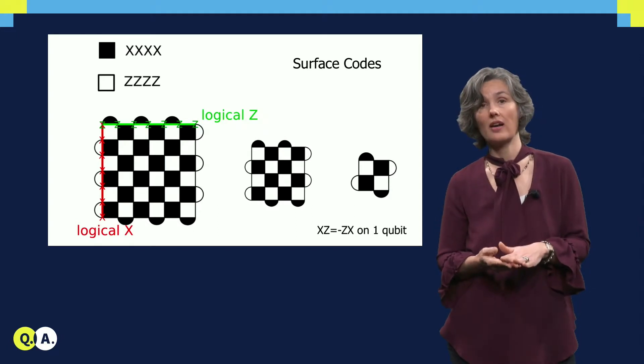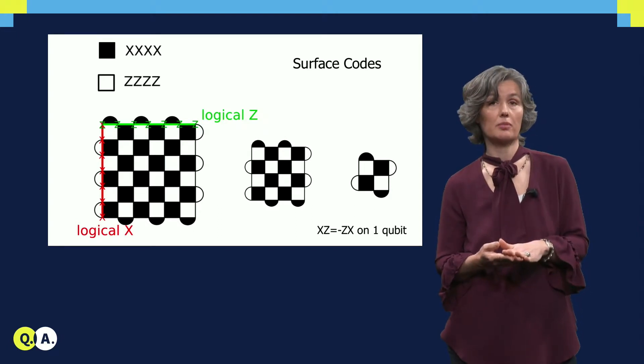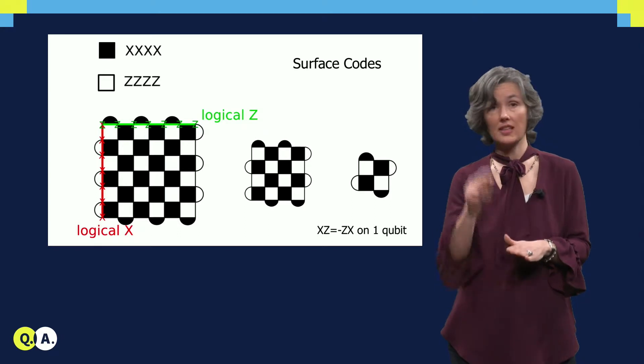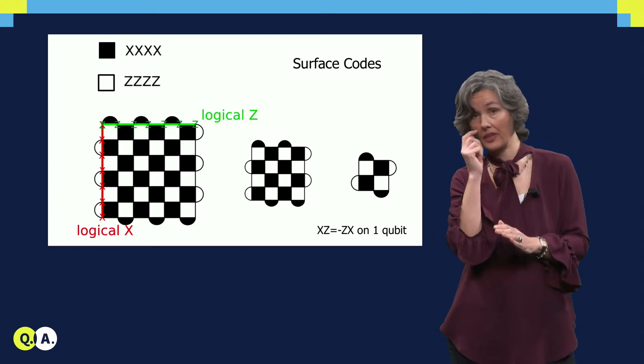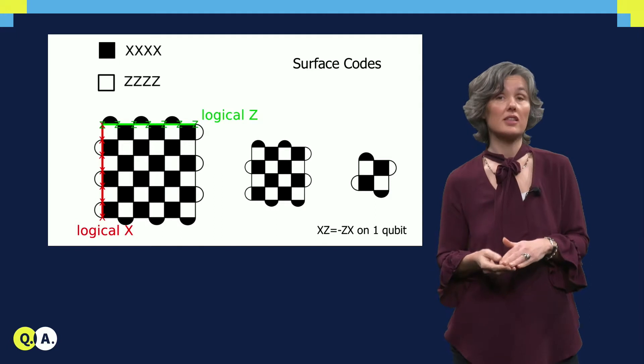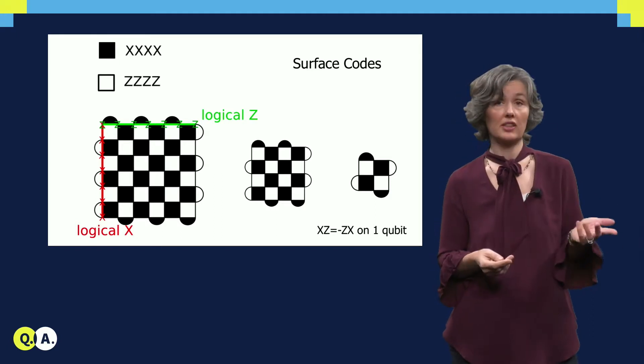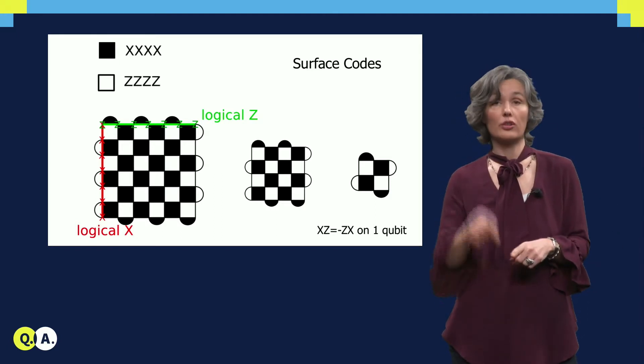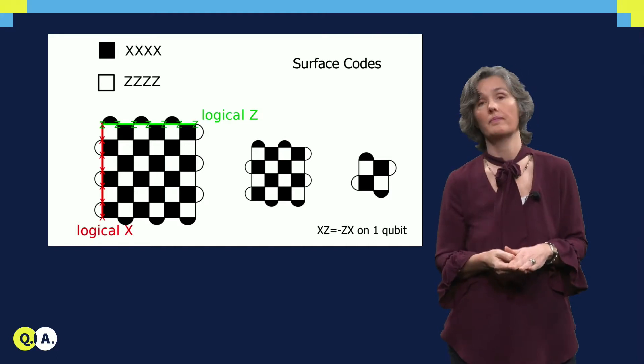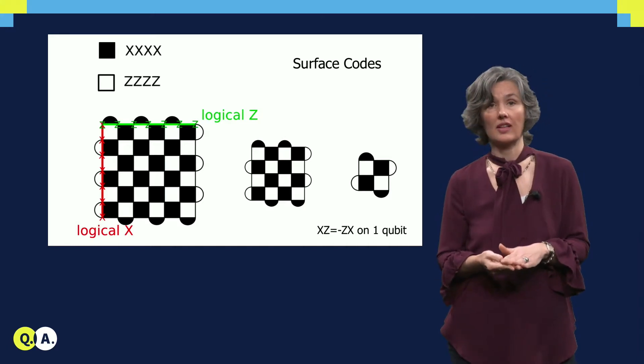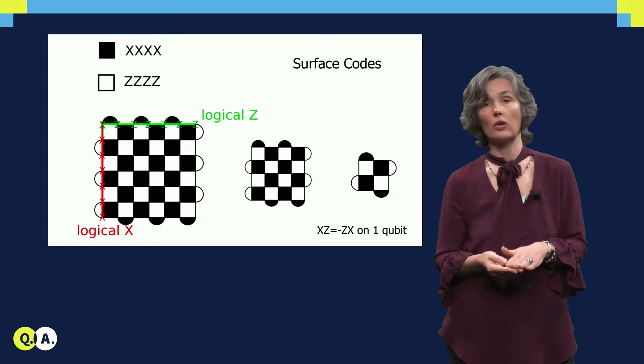Each black square represents an x parity check between 4 qubits, detecting a z error. Each white square represents a z parity check, which similarly detects x errors on the 4 qubits on which it acts. At the boundary of the lattice, the parity checks involve only 2 qubits.